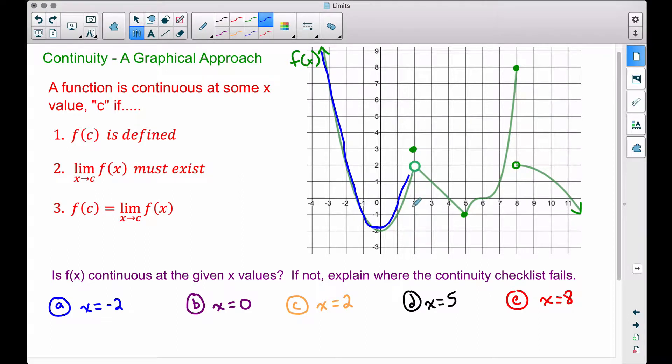But notice when I hit right here when x is 2, I can't color that dot in because it's an open circle. That is a discontinuity there. For us to continue along this curve, we'd have to pick up our pen, come here, pick up our pen again, and then continue along.